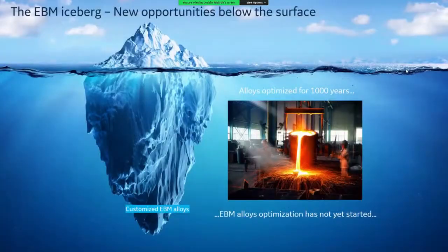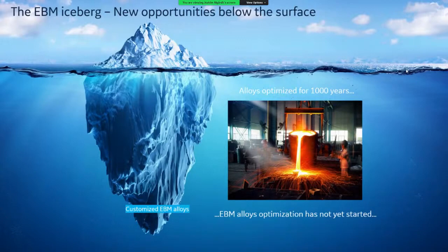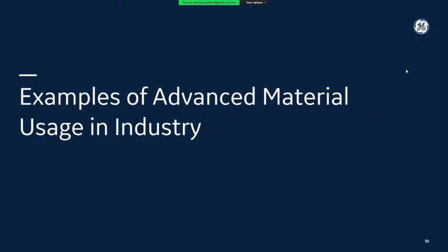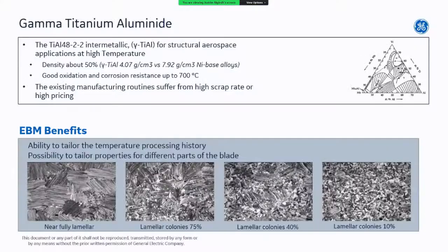Finally, when it comes to other material opportunities, we also see the need for tailoring alloys specifically for EBM. Conventional cast materials — essentially all the materials described — were developed for casting processes. We have not yet seen the start of development of alloys specifically designed for EBM. As a closing industrial example: gamma titanium aluminide, a crack-prone and very reactive material, is used in industrial production today with EBM. By utilizing different scan strategies, we are actually able to tailor the microstructures, as shown in the images.